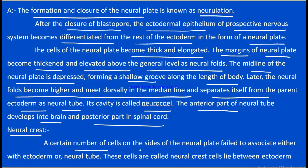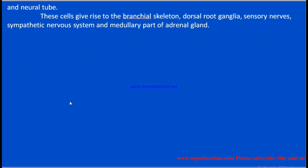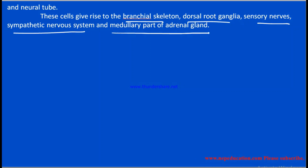Regarding the neural crest cells: a certain number of cells on the sides of the neural plate fail to associate either with the ectoderm or with the neural tube. These cells are called neural crest cells, and they lie between the ectoderm and the neural tube.